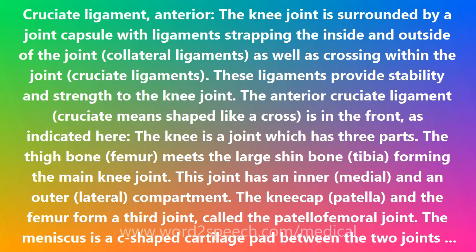The large muscles of the thigh move the knee. In the front of the thigh, the quadriceps muscles extend the knee joint. In the back of the thigh, the hamstring muscles flex the knee. The knee also rotates slightly under guidance of specific muscles of the thigh.